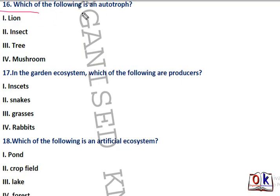Question number 16: which of the following is an autotroph? Autotrophs are organisms which can prepare their food by themselves. Options are lion, insects, tree, or mushroom. Third will be the right answer — tree.